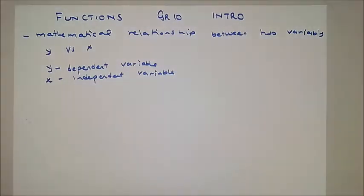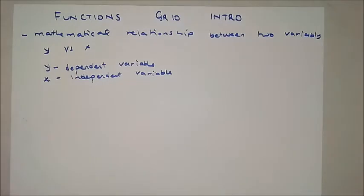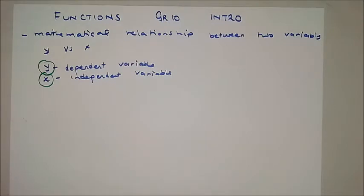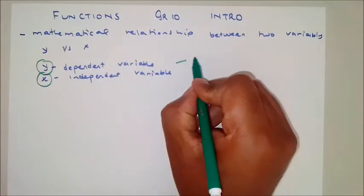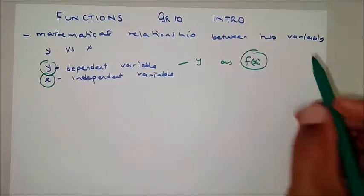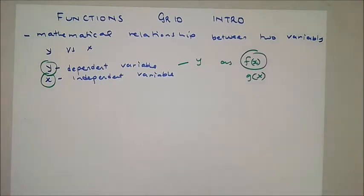In general, when we speak of functions, we speak of a mathematical relationship between two variables. We have y and x — y is the dependent variable and x is the independent variable. Sometimes y is written as f of x, or g of x, whatever the case may be. Just know that y depends on another variable.